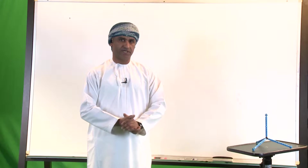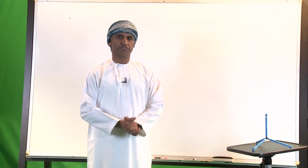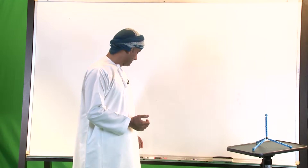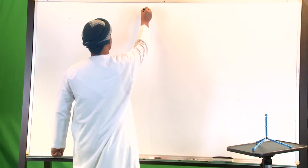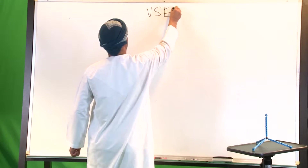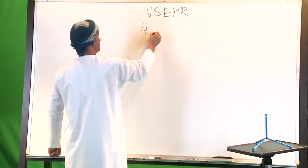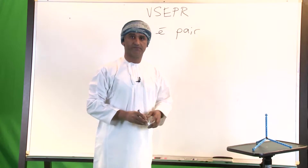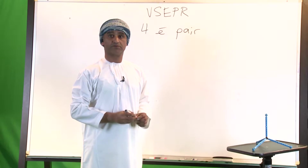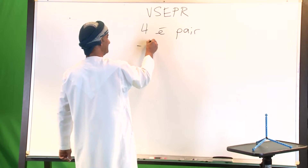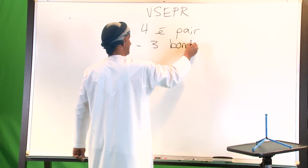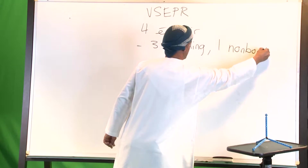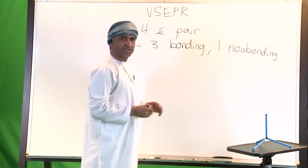Continuing the discussion of the VSEPR model and prediction of molecular shapes, this time we take another case where the number of electron pairs is four. This four electron pair case is different from the one discussed before — not all electron pairs are bonding: three bonding and one non-bonding.